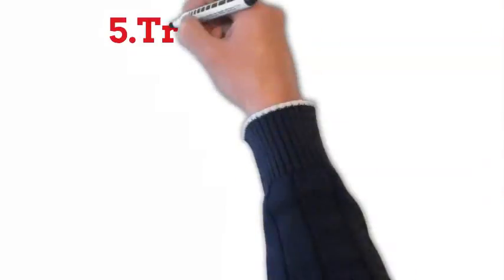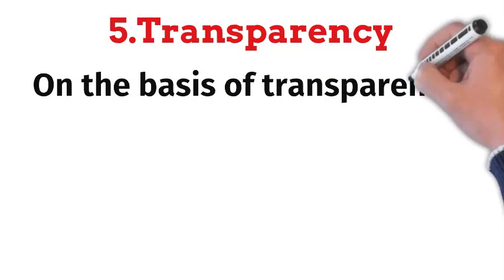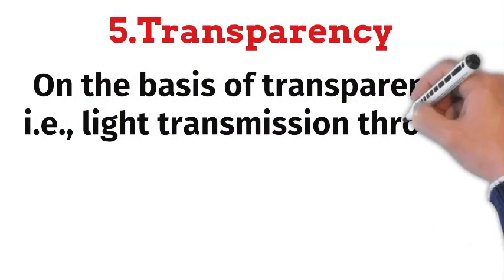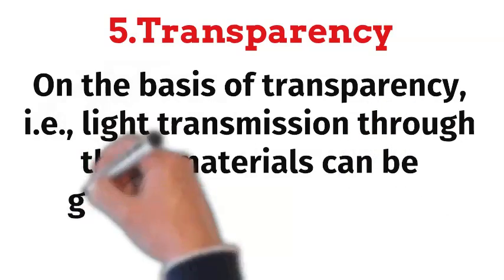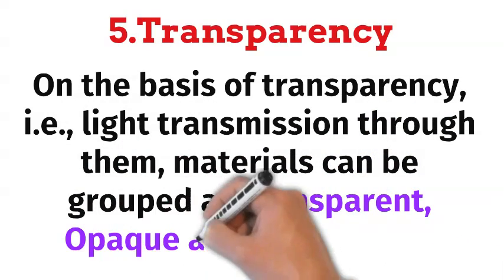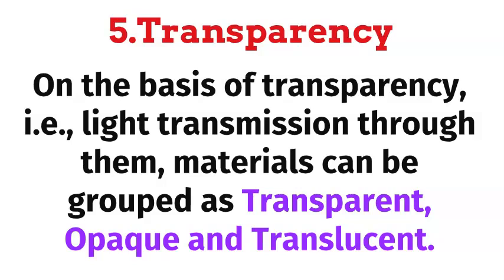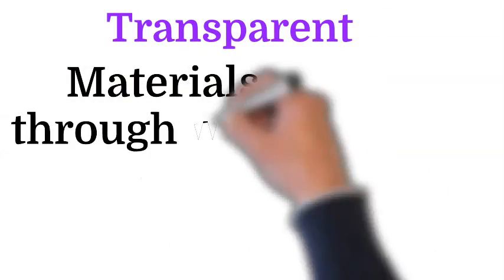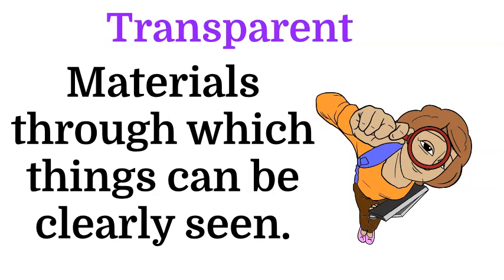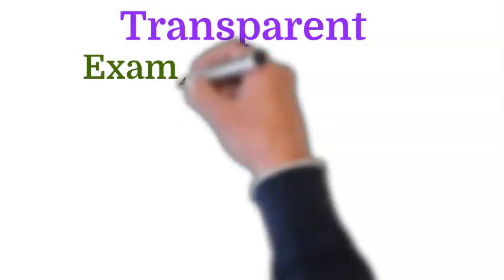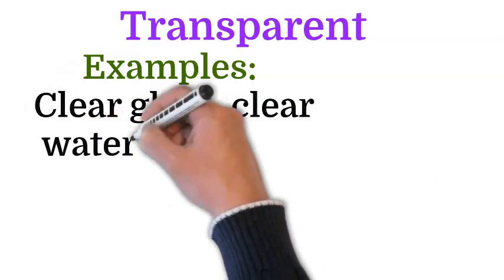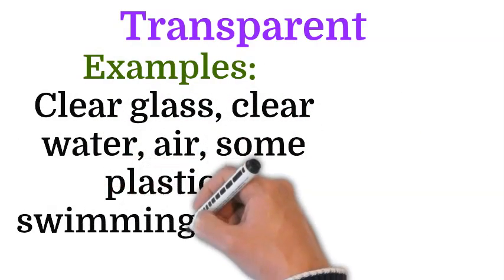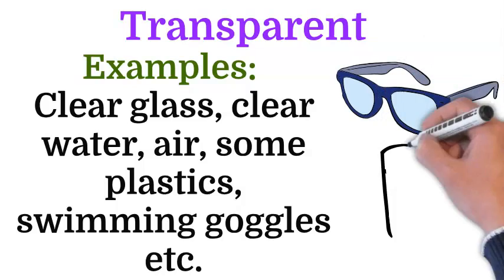Fifth, the transparency. On the basis of transparency, i.e. light transmission through them, materials can be grouped as transparent, opaque, and translucent. Transparent materials are those through which things can be clearly seen. Examples are clear glass, clear water, air, some plastics, swimming goggles, etc.